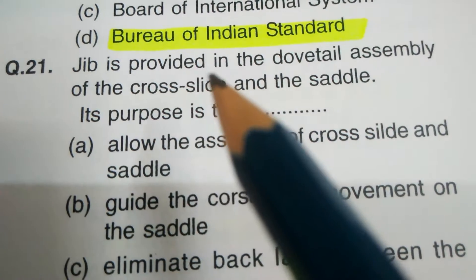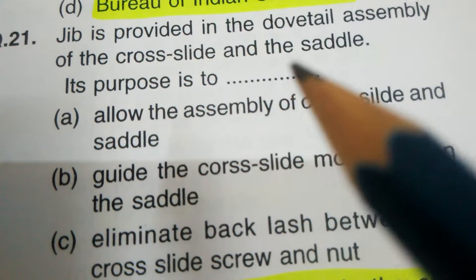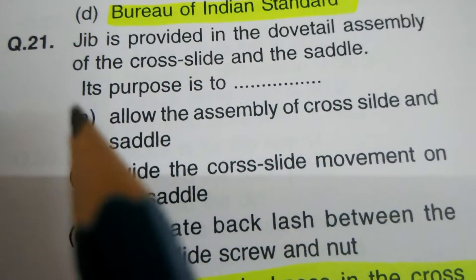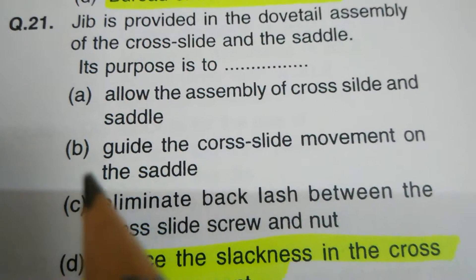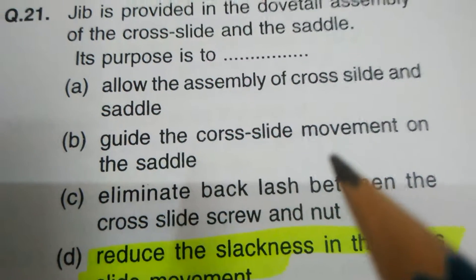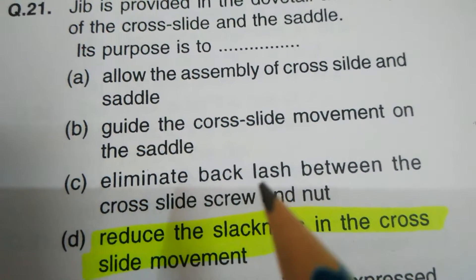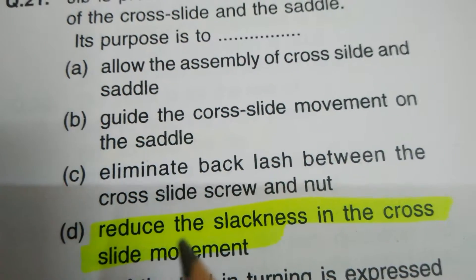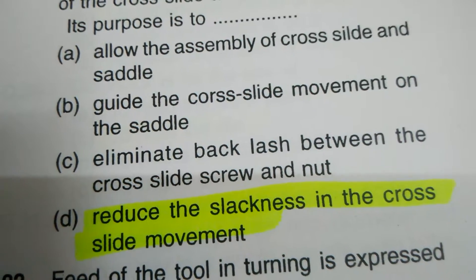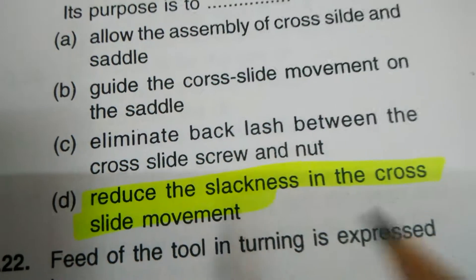Question number twenty-one. A GIB is provided in the dovetail assembly of the cross slide and the saddle. Its purpose is to: options are allow the assembly of the cross slide and saddle, guide the cross slide movement on the saddle, eliminate backlash between the cross slide screw and nut, reduce the slackness in the cross slide movement. The correct answer is: reduce the slackness in the cross slide movement.